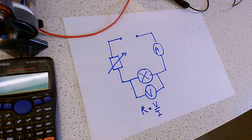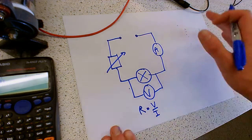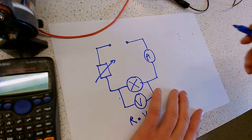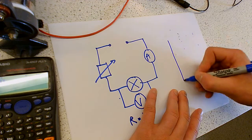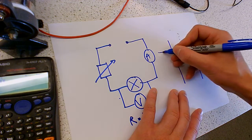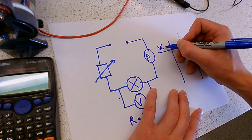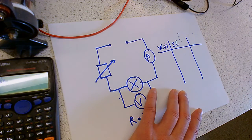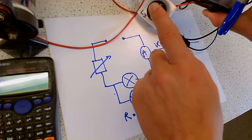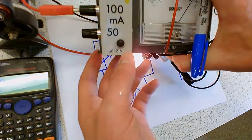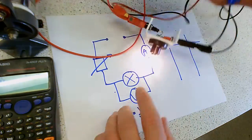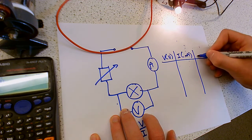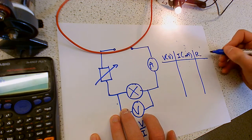Using the voltmeter and ammeter we're going to be able to calculate the resistance by doing V over I. We're going to look at how the resistance of the light bulb changes as we apply bigger and smaller potential differences across it. We're going to record two things from the experiment: the current from the ammeter, recorded in milliamps, and the resistance calculated in ohms.